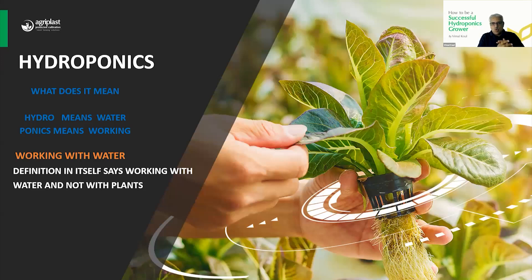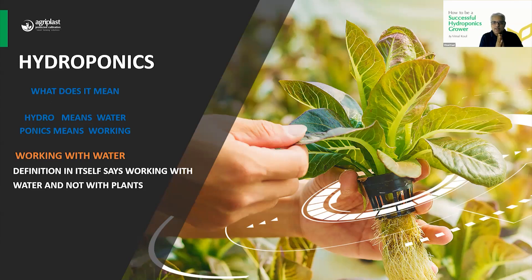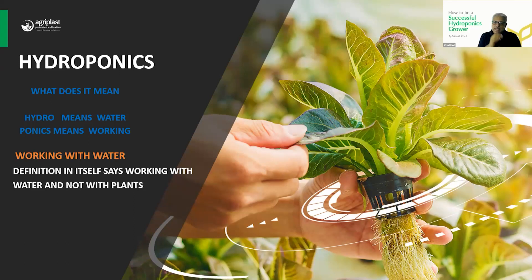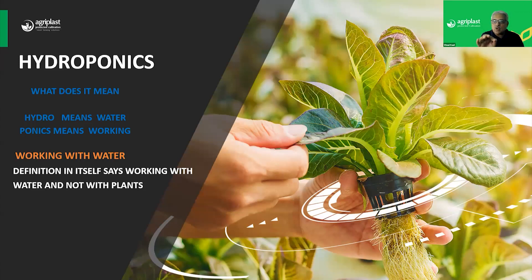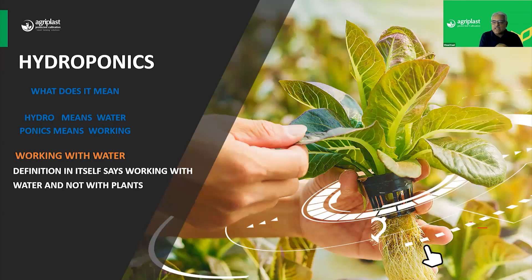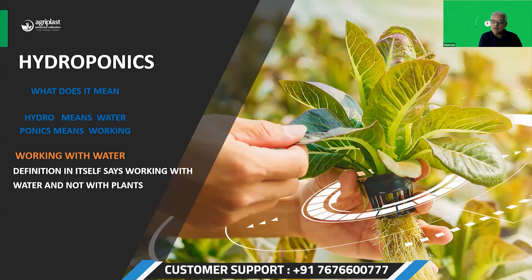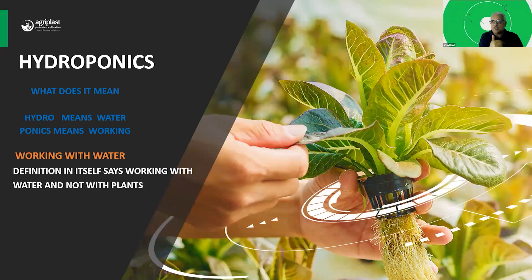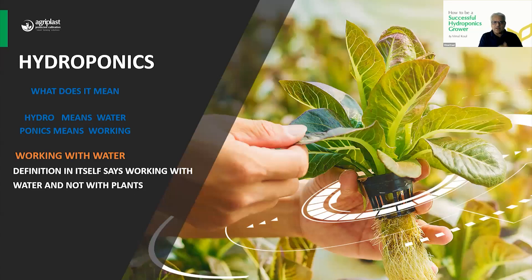Now let's come to the next segment, and that is hydroponics — the most sought-after topic. Now what is hydroponics, what does it mean? Let us keep things very simple. Agriculture is an activity that needs to be done on the ground. It cannot be done on Excel sheets or laptops. It's to be done on the field, and once you're on the field, you need to get it into your blood, registered in your mind. That will help you in implementing basic science while doing it actually on the field. So what is hydroponics? It's a Greek word — hydro means water.